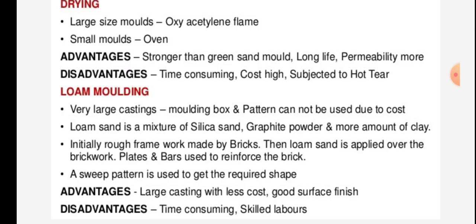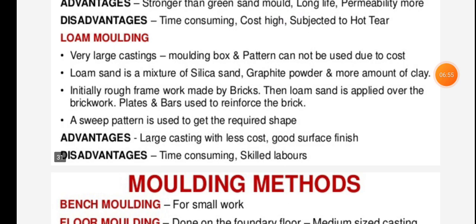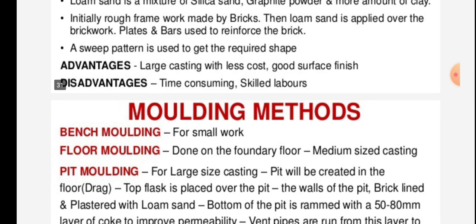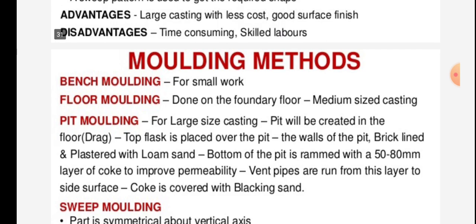Loam molding process: used for very large castings where a pattern cannot be used due to cost. The sand is a mixture of silica sand, graphite powder, and a higher amount of clay. A sweep or ship pattern is used to get the required shape. Advantages: large castings with less cost and good surface finish. Disadvantages: time consuming and skilled labor is required for this process.